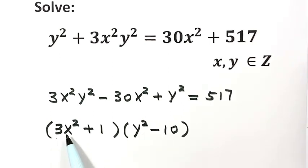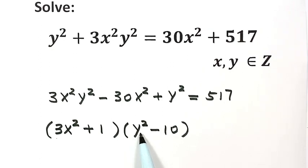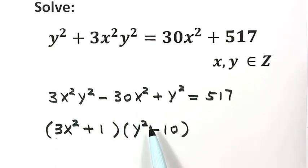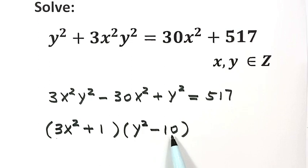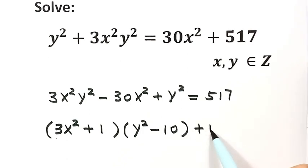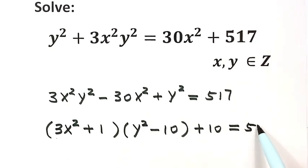Let's check: y squared times 3x squared gives us that term; y squared times 1 gives us here; negative 10 times 3x squared gives us here; negative 10 times 1 gives negative 10. So we have one extra term, negative 10, so we add plus 10 on the outside. That equals 570.